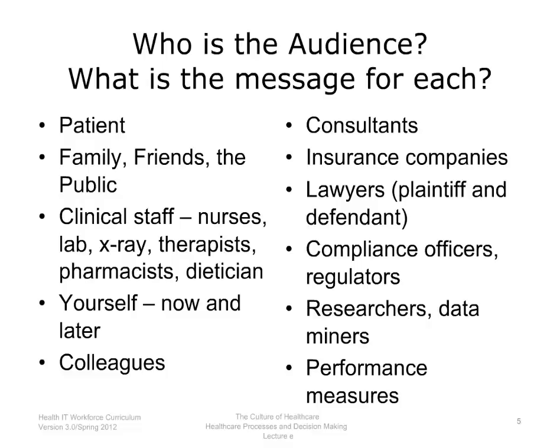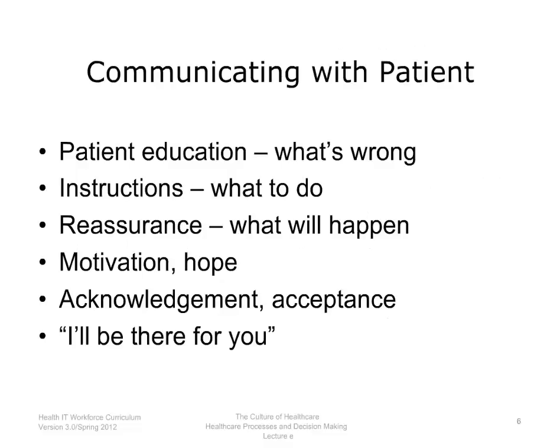The next question is to determine the appropriate message for each of these audiences. First on the agenda is communicating with the patient. Patient education is necessary to explain what is wrong, how it came about, and what can be done. Patients need specific instructions about what to do, and these instructions must be put in a language and format that the patient can use effectively. Often, patients need reassurance about what will happen, motivation to become more engaged in their care, or a sense of hope when the prognosis is grave. Whatever the problem, whatever the prognosis, patients may need acknowledgement, acceptance, and a clear understanding that the clinician will be there for them. Communicating the plan to the patient may involve any or all of these goals.